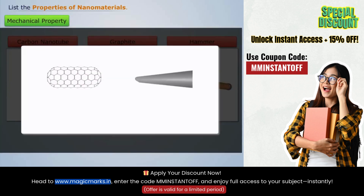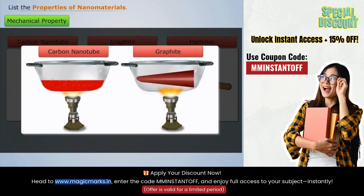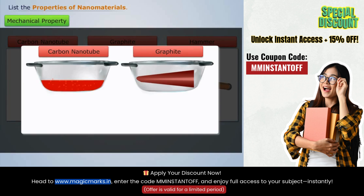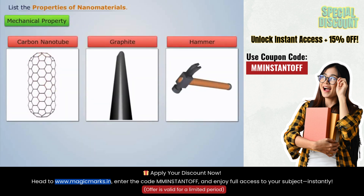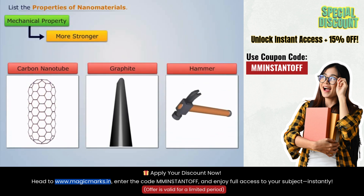And when we burn these two materials, we observe that the carbon nanotube melts easily compared to graphite. Thus, we can conclude that nanomaterials are stronger and have a low melting point.